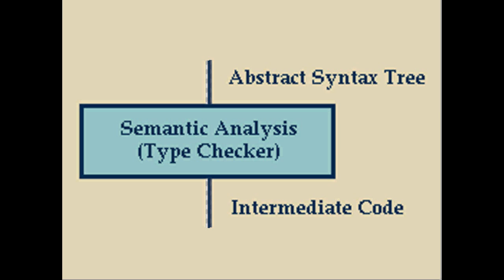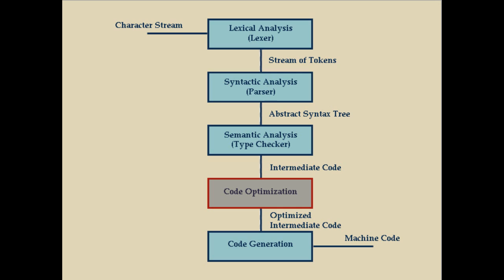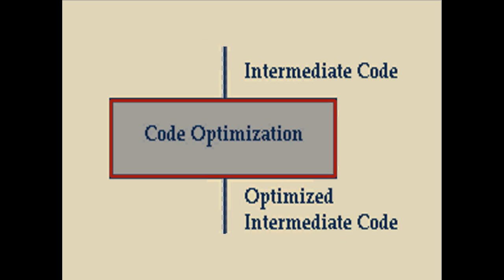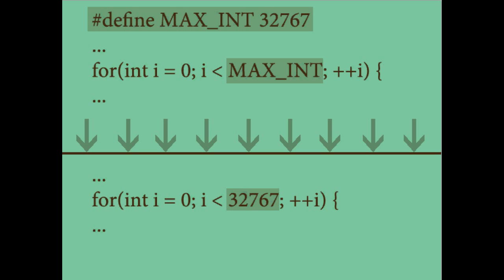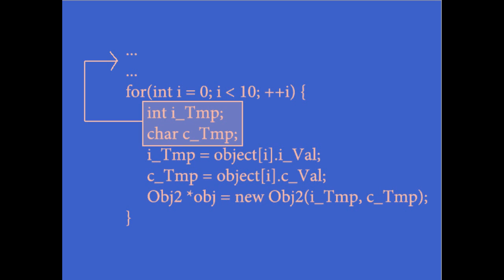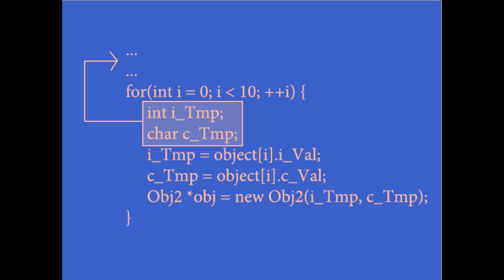The output of the semantic analysis phase is called intermediate code. After semantic analysis, the compiler moves to the code optimization stage. The code optimizer intercepts the intermediate code being passed from semantic analysis before it can reach the code generator. In this phase, your program is combed for statements that could be described more effectively to produce faster or more resourceful code. Examples of code optimizations include the evaluation of constants and reordering code to improve cache performance. The output here is simply optimized intermediate code.